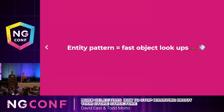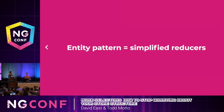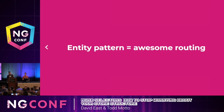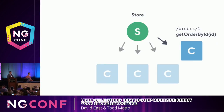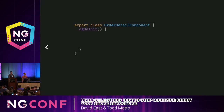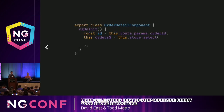The entity pattern is really good for fast object lookups — getting a 10,000th item in the list is just as fast as getting the first item. It really simplifies reducers because it gives us a standard way to write them. But where the entity pattern really shines is when you use it with the router. With our getOrderById selector, we need an ID to get an order, so if we have a router path of /orders/1, that 1 is the obvious candidate to pass into the ID.